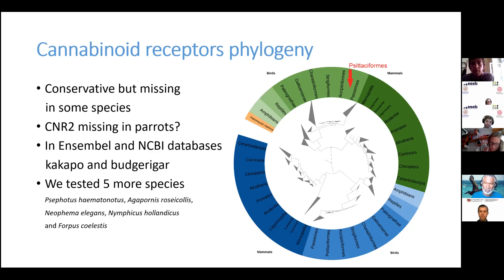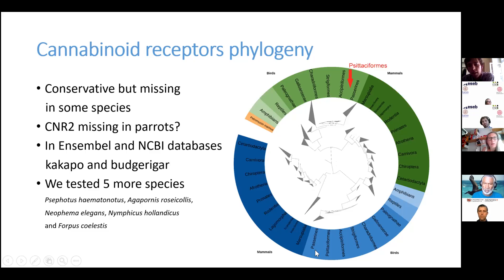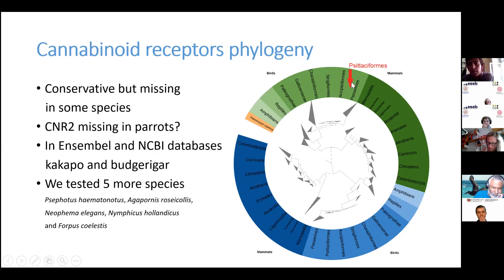When we did the phylogeny analysis — you may see on the picture a phylogenetic tree of tetrapod cannabinoid receptors, excluding fish because of their problematic polyploid genomes — we can see the ancestral gene in lamprey, then it divides into cannabinoid receptor one in the blue part and cannabinoid receptor two in the green part. When we tested the parrot species, we noticed that the order Psittaciformes is missing in the cannabinoid receptor two part.